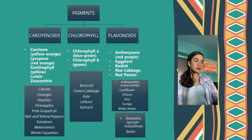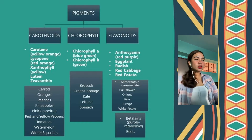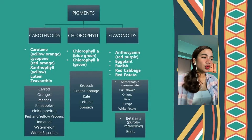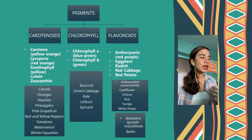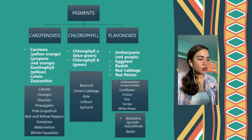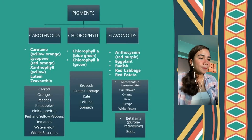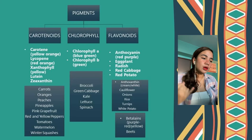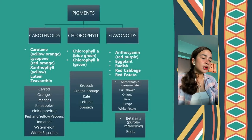Next we have chlorophyll. There are two types of chlorophyll: chlorophyll A and chlorophyll B. Chlorophyll A is blue-green, while chlorophyll B is green. Examples of chlorophyll pigment include broccoli, green cabbage, kale, lettuce, and spinach.